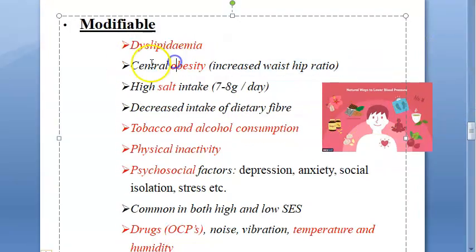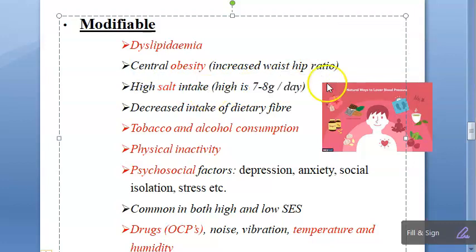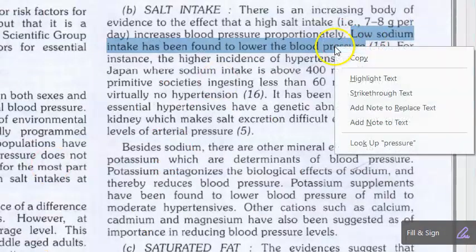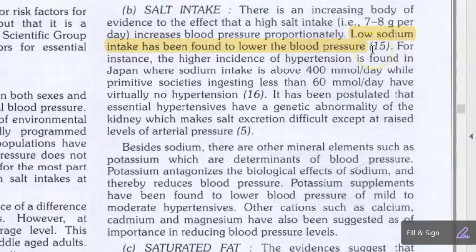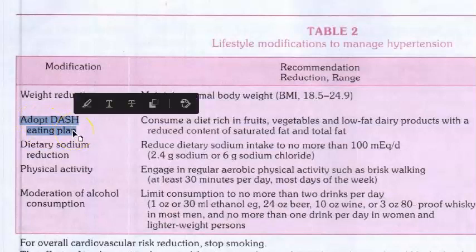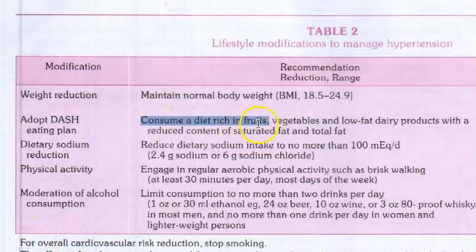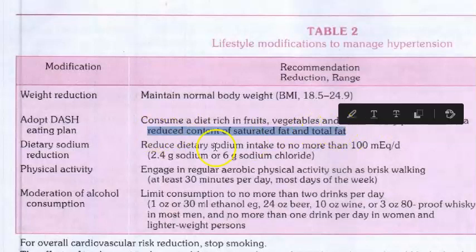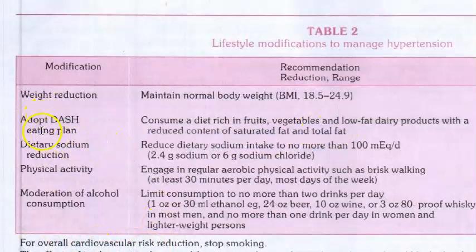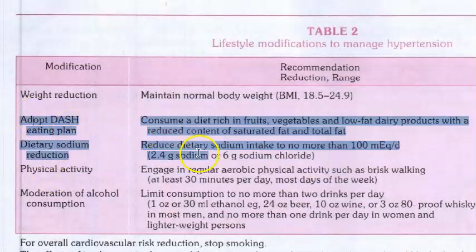So that is waist-hip ratio — he can modify this. Regarding high salt intake, he should not have high salt. Low sodium intake has been found to lower blood pressure. He should adopt the DASH eating plan — Dietary Approaches to Stop Hypertension. The DASH diet includes a diet rich in fruits, vegetables, low-fat dairy products, and reduced content of saturated fat and total fat. Dietary sodium reduction is also required.